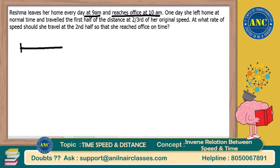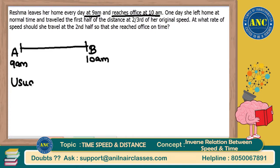That means Reshma is traveling from home to office — suppose from A to B. She will start from home at 9 am and she will reach office at 10 am. That means, can I say that every day if she is traveling at her usual speed, the usual time taken for her to reach the office is from 9 o'clock to 10 o'clock — she will usually take one hour every day.